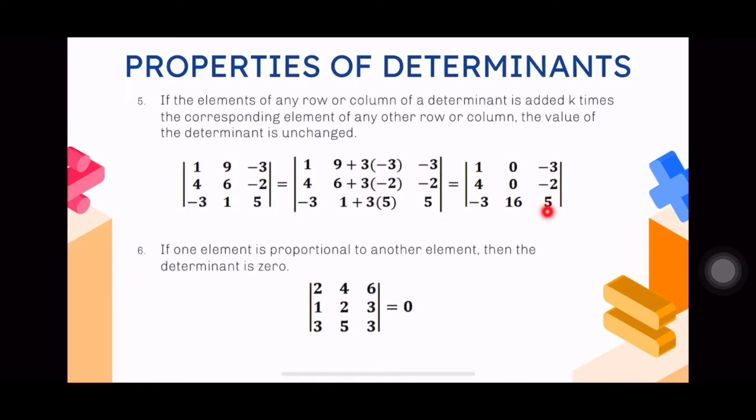The second column was added three times the third column. So the second column is nine plus three times negative three, the second row is six plus three times negative two, and one plus three times five. This results in the matrix one, zero, negative three; four, zero, negative two; negative three, sixteen, five. If you notice these changes, the determinant of this matrix is just the same as the determinant of this matrix. But imagine if these two matrices are given to you side by side - will you be able to notice that a certain property was used to simplify? This determinant is easier to obtain because of the presence of zero entries.